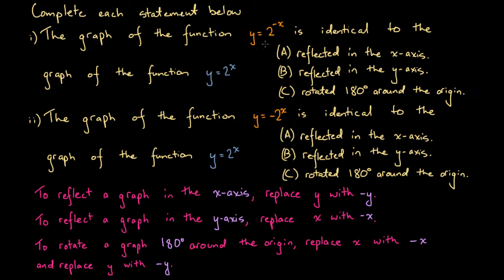So what's happened here? This blue function is similar to this orange function, except in the orange function the x has been replaced with minus x. We had y equals 2 to the power of x, whereas in the orange function we have y equals 2 to the power of minus x. Since x has been replaced with minus x, this orange graph is identical to the blue graph except it's been reflected in the y-axis. So we choose b — reflected in the y-axis.